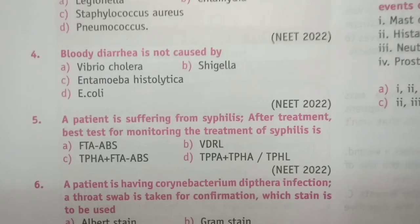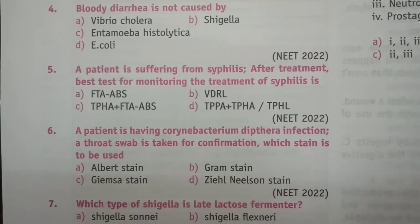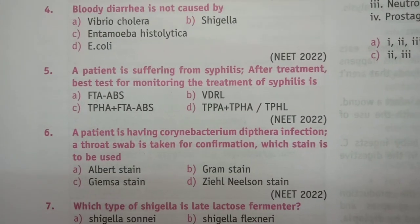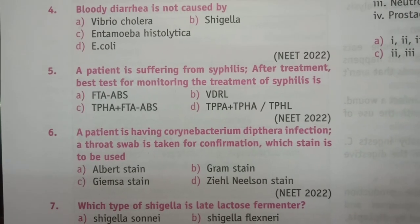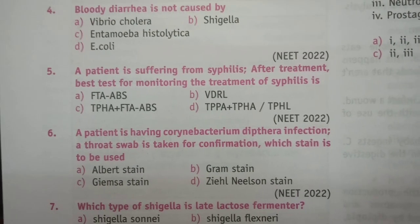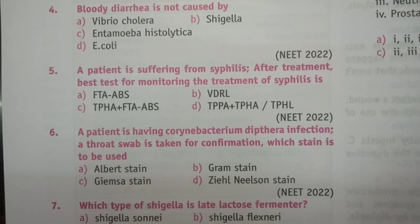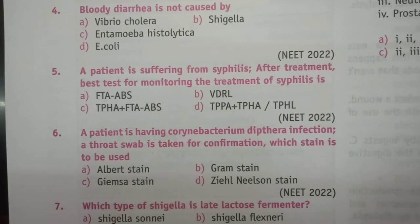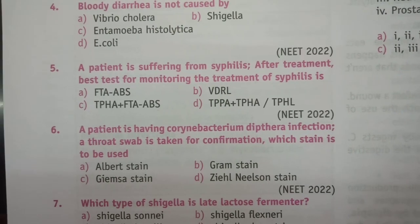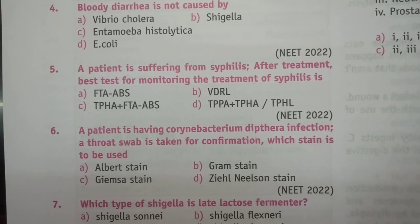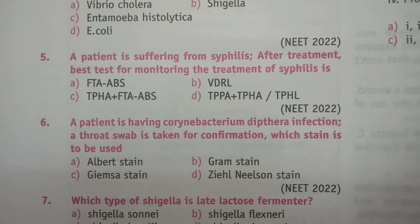VDRL is the best test for monitoring the treatment of syphilis. Question 6: A patient has Corynebacterium diphtheriae infection. A throat swab is taken for confirmation. Which stain is to be used? Albert stain, Gram stain, Giemsa stain, or Ziehl-Neelsen stain? The answer is A, Albert stain.